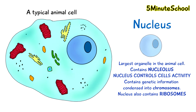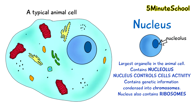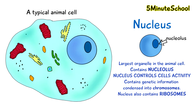Here we have the nucleus. This is the largest organelle within the animal cell. It contains a nucleolus, which can be seen here. The nucleus controls the cell's activity and also contains the genetic information, which is organized into structures called chromosomes. The nucleus also contains ribosomes.